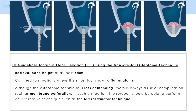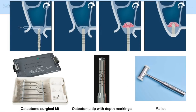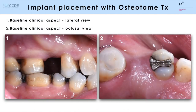For that reason, the surgeon must be able to switch to a lateral window technique in case of a membrane perforation. Here you see the surgical kit you need. You need an osteotome tip with depth markings and a mallet. The intraoral view of the single tooth gap shows a sufficiently spaced single tooth gap mesiodistally and a nice band of keratinized mucosa.